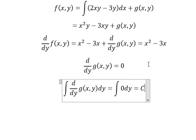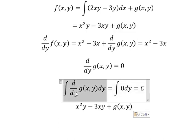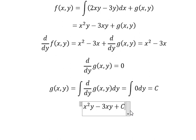And we have C. So we go back in here. The integration of d/dy g(x,y) dy equals the integral of zero dy equals C. So x squared y minus 3xy plus C equals f(x,y) equals C.